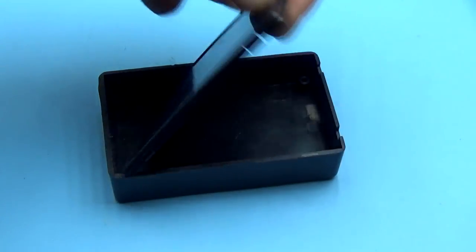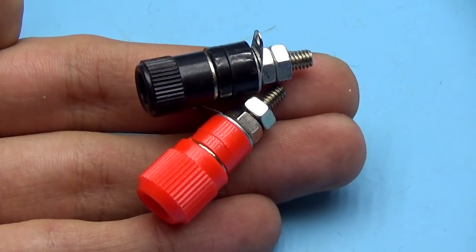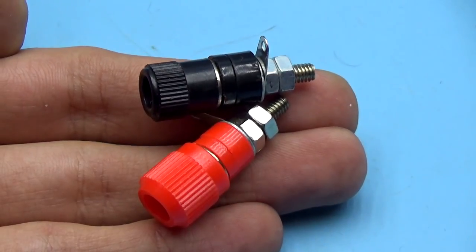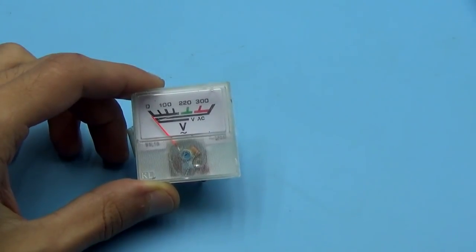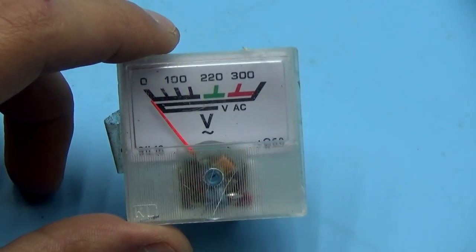The finished device inserts in any suitable box. For convenience, I put a couple of terminals. To the output of the converter, an analog voltmeter is connected. It was taken from a voltage regulator.